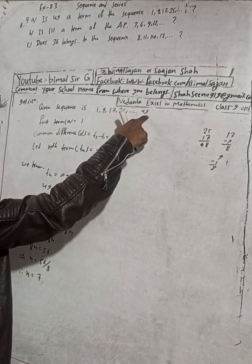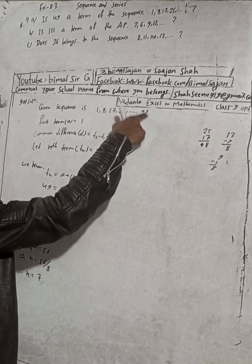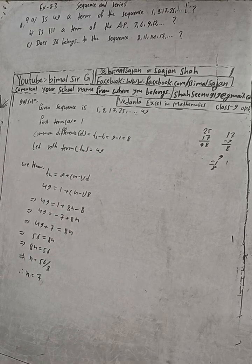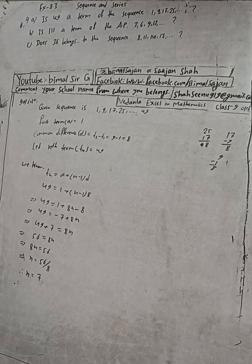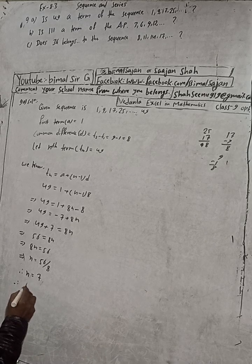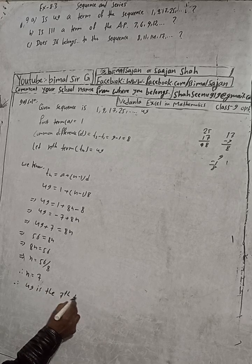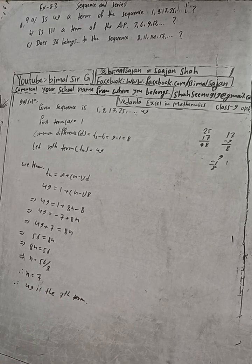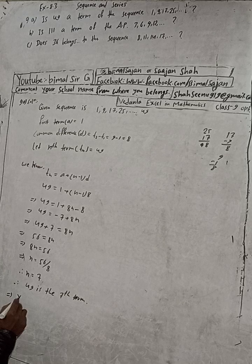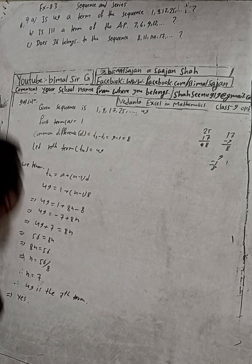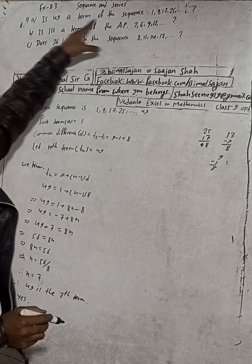So 49 is the 7th term. We supposed 49 is some nth term, and we found n = 7, so the 7th term is 49. Therefore, 49 is the 7th term of this sequence. The question asked: is 49 a term of this sequence? Yes, 49 is a term of the sequence.